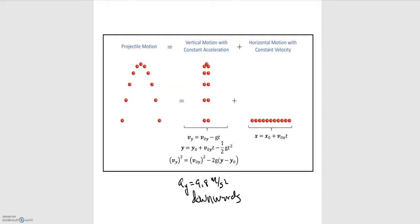With projectile motion, we have motion in both the x and y direction, and we have to split that motion up. One of the nice things about projectile motion, and physics in general, is that what happens in the y direction is independent of what happens in the x direction, and vice versa. You deal with the y direction separately, then deal with the x direction separately, and then combine them to describe the overall motion of the object.